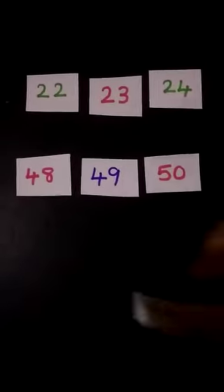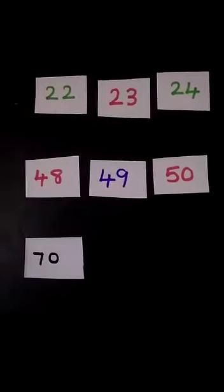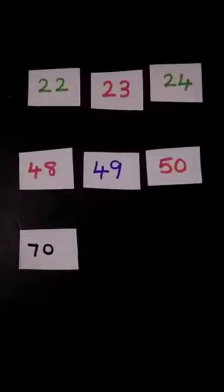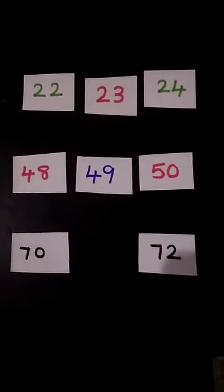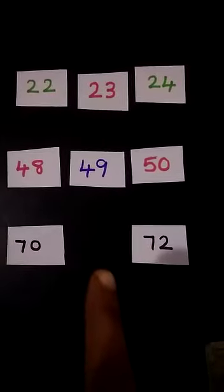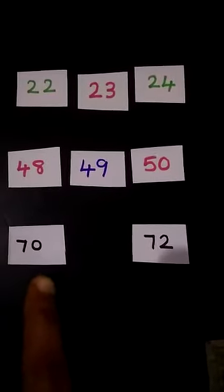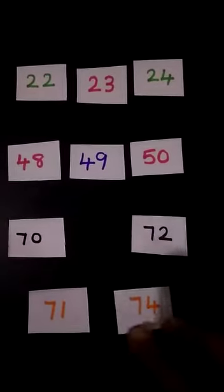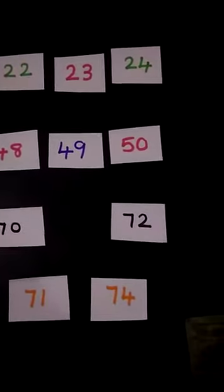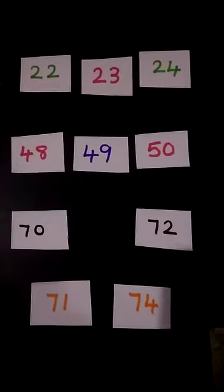Now I am keeping another number — 70. Here, 72. So now we are going to find the between number of 70 and 72. So here I am keeping two different numbers, and from these two different numbers we have to pick the correct number.